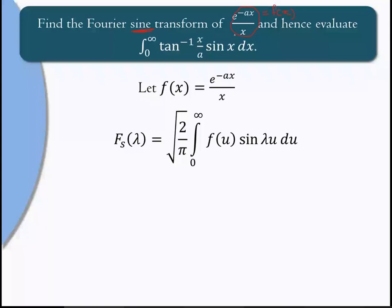There is no restriction on x, so no need to split the integration. Substituting f(u) = e^{−au}/u: fs(λ) = √(2/π) ∫_0^∞ (e^{−au}/u) sin(λu) du. Now there are three terms: e^{−au}, sin(λu), and 1/u. Integration by parts is not convenient since the derivative of no term vanishes — derivative of 1/u gives −1/u², and so on.